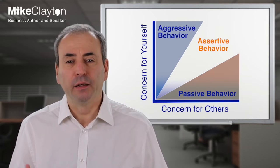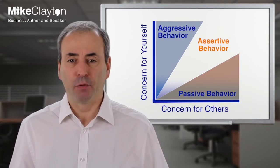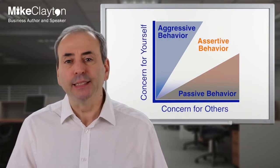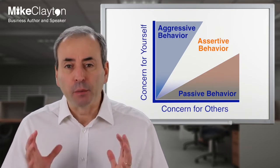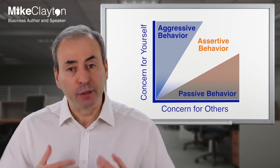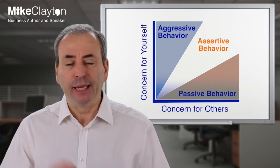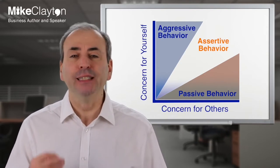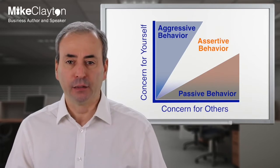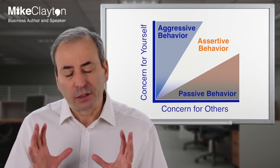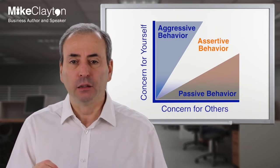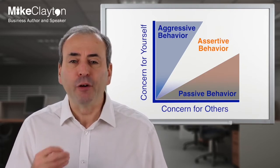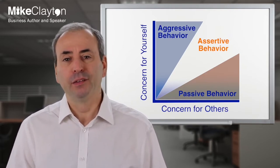Instead of putting your own desires ahead of others as aggressive behavior does, or putting others' needs ahead of yours as passive behavior does, assertive behavior recognizes the value of both and tries to find a fair and equitable solution. This kind of behavior is all about collaboration — which means this is the place to start if you want to avoid conflict, the place to get to quickly if conflict starts to escalate, and the place to be if you need to de-escalate conflict.